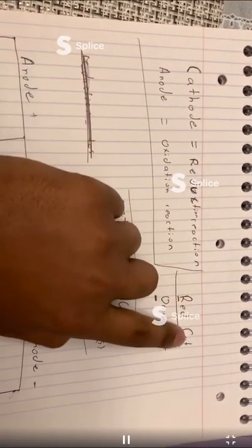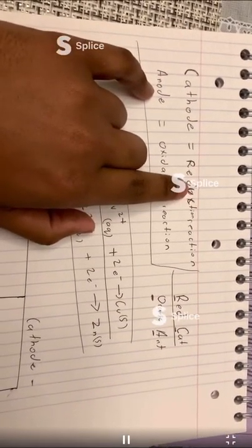How I remember that: red cat, because reduction cathode. Orange ant, oxidation anode.